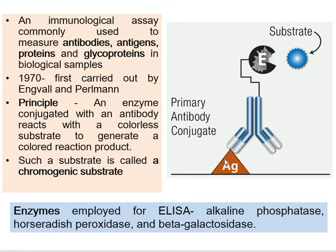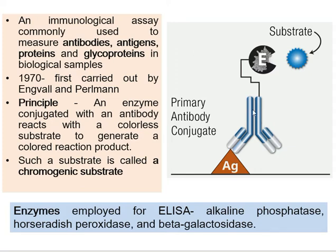Suppose you want to detect the presence of an antigen in a sample. This is called direct ELISA, in which you coat your sample — which you suspect contains that antigen — onto this plate surface. Suppose the sample is containing that antigen. Your ELISA kit should contain the antibody that can specifically bind to that antigen.